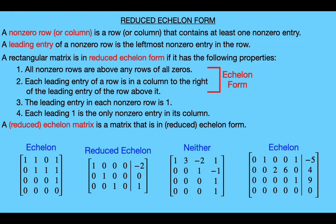Now you might be wondering why we even care about echelon or reduced echelon form. The reason is that these forms are very useful for solving linear systems. When the augmented matrix of a linear system is in echelon form, we can instantly tell if the system is consistent and how many solutions it has. And if it's in reduced echelon form, we've essentially solved the system.